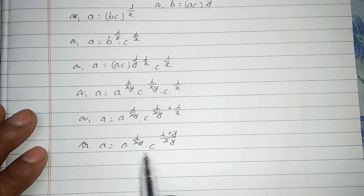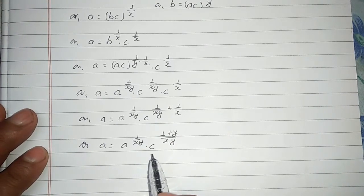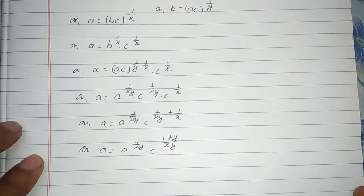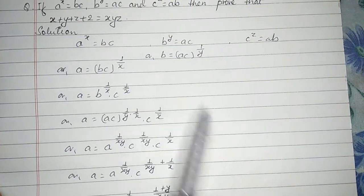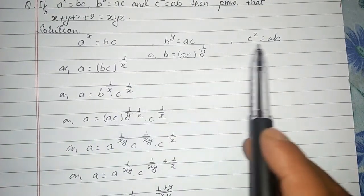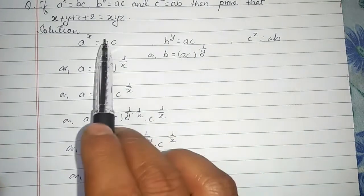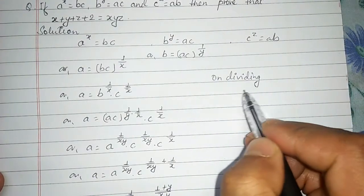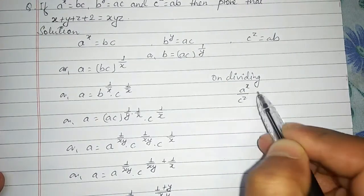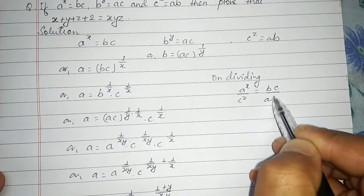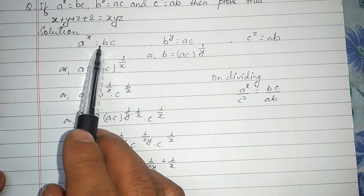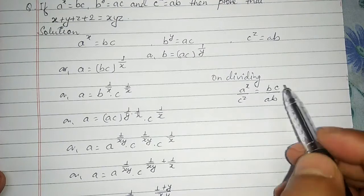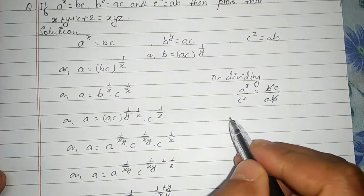Now we need to convert c in terms of a to get the required solution. Taking the first condition a to the power x equals bc and the third condition c to the power z equals ab, and dividing them: a to the power x divided by c to the power z equals bc divided by ab. The b's cancel, giving a to the power x upon c to the power z equals c by a.